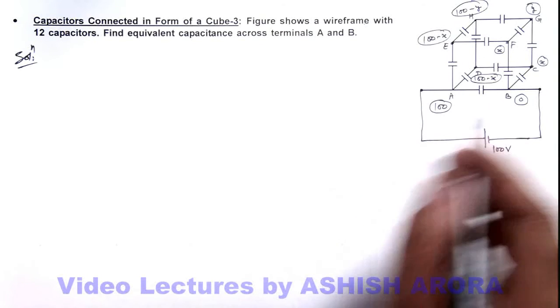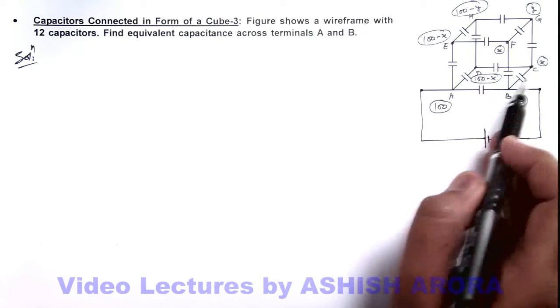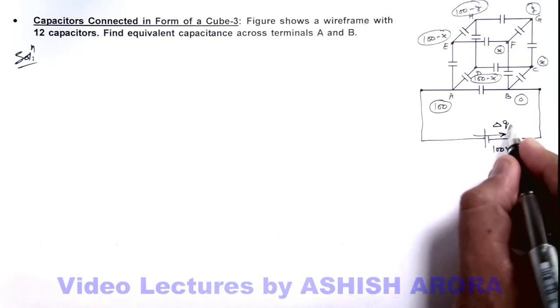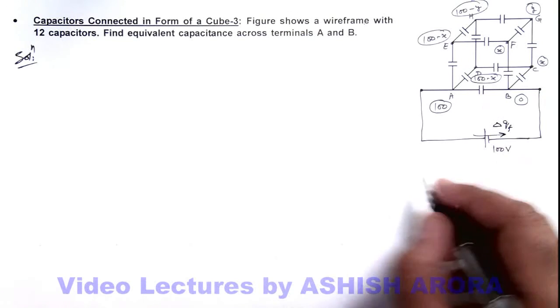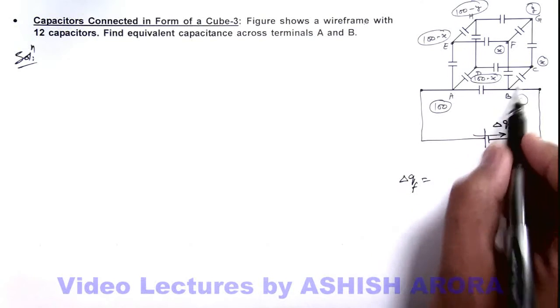Now we need to calculate two variables x and y to find the value of x so that we can calculate the total charge which is flowing through battery, which is delta qf. Here let us first write the value of delta qf which flows through the battery, that is through these three capacitor plates.